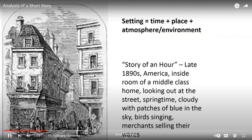The setting is the time, place, and the atmosphere in which a story takes place — all environmental factors go in with setting. In the Story of an Hour, we see that it's the late 1890s, right at the end of the Victorian era. It's in America, inside a room of a middle-class home, looking out at the street — springtime, cloudy with patches of blue in the sky, birds singing, merchants selling their wares. We can start making connections between all these details and understanding what they mean and what type of theme they relate to.